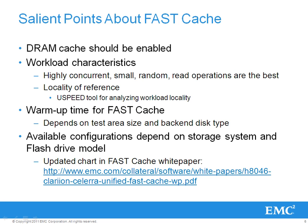Another important characteristic is the locality of reference. The higher the locality of reference of your application workload, the higher the performance benefit you can expect from fast cache. We have uSpeed tools available which can help determine the locality of reference in customers' workloads. You should contact your uSpeed representative to get access to this tool. As we saw in the last slide, warm-up time is an important characteristic of fast cache. This will depend on the size of your application's working set — a larger working set would need more warm-up time. The back-end disk type in your storage system also affects the fast cache warm-up time. Available fast cache configurations depend on the storage system and the flash drive model. This information is available in the fast cache white paper, the link for which is provided here.